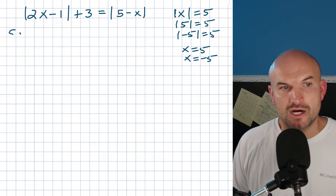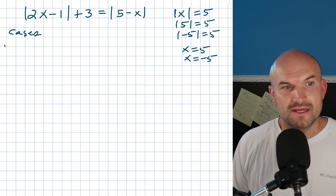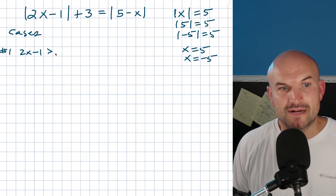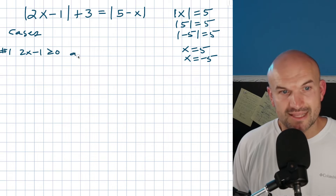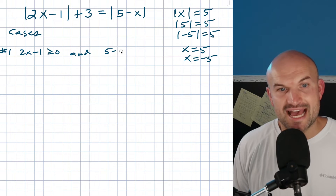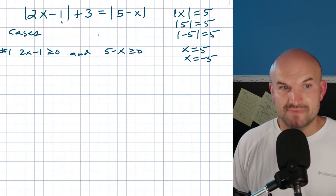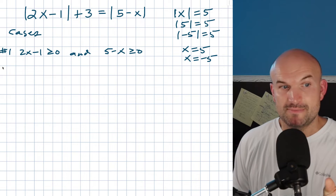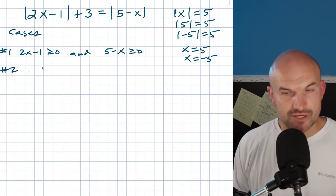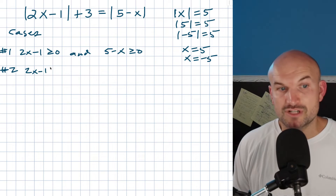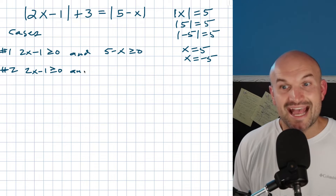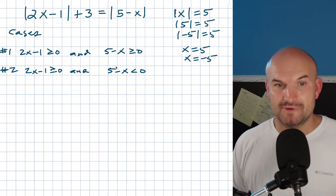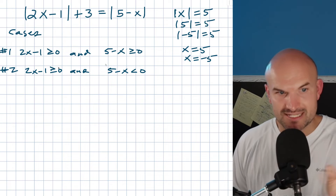Let's go through our cases. Case number one is when 2x minus 1 is greater than or equal to zero, and 5 minus x is greater than or equal to zero — so both absolute values are in the positive case. Case number two is when 2x minus 1 is greater than or equal to zero, and 5 minus x is less than zero — so positive, then negative.